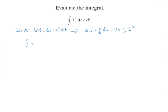So remember, integration by parts: we have the integral of u dv equals u times v minus the integral of v du.